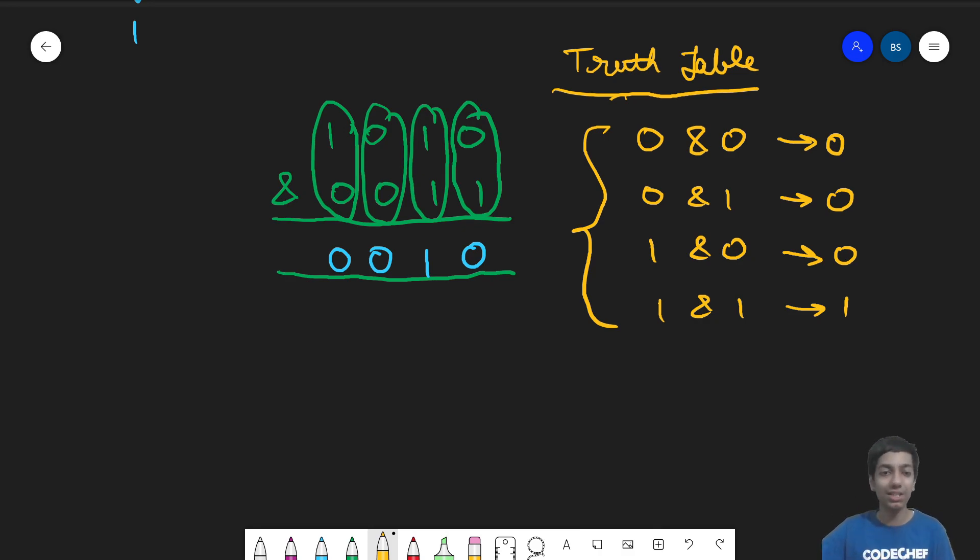It means that if two conditions are given, AND will only give us true. It will only validate them if both of them are being satisfied. Like if I say that I will drink water if I am feeling thirsty and there's a bottle close to me. So both of the conditions must be met. Only in that case, I will drink water. So that's how you can understand this better.